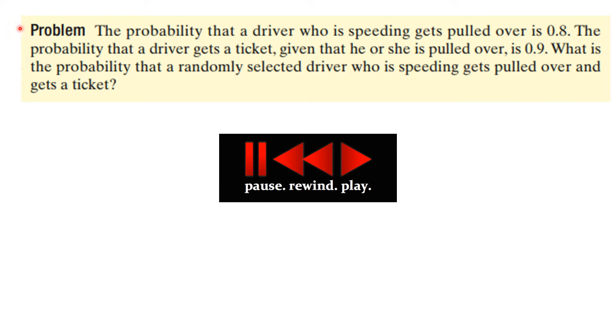So we can apply that rule, that theorem, to this problem. The probability that a driver who is speeding gets pulled over is 0.8. Actually, I think it is a lot less than that, but that's what the probability is said. The probability that a driver gets a ticket given that he or she is pulled over is 0.9. So the question here is, what is the probability that a randomly selected driver who is speeding gets pulled over and gets a ticket?